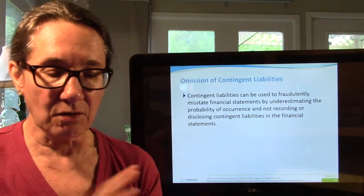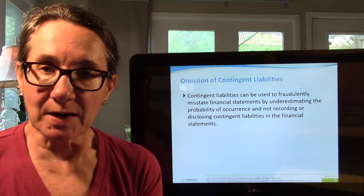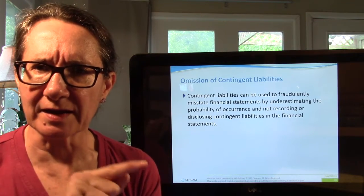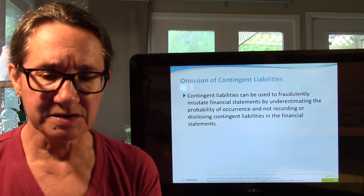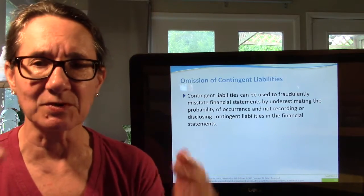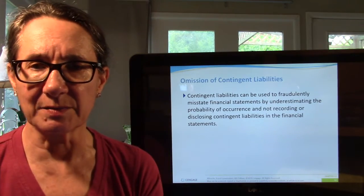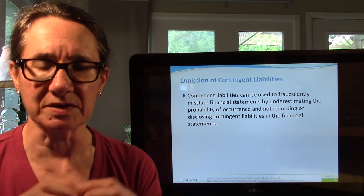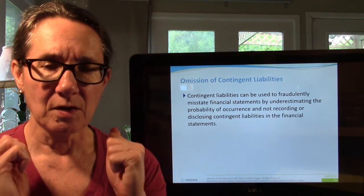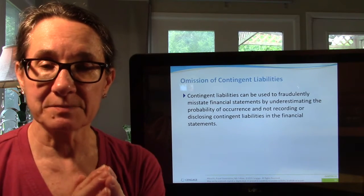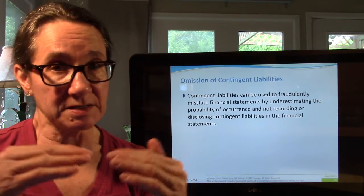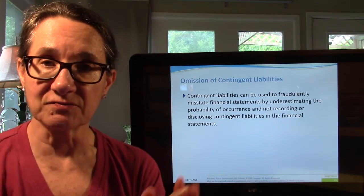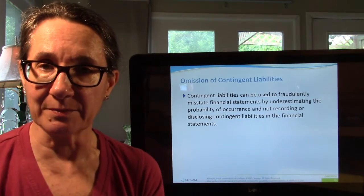So we've talked about the different ways that clients can commit liability frauds — typically trying to increase net income or just reduce the liabilities. You want your liabilities to look low, so you understate them. That must leave some symptoms, and on the next video we're going to talk about things you can look for as you do your fraud investigation to identify that someone is committing liability fraud.